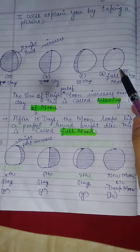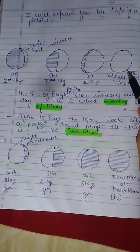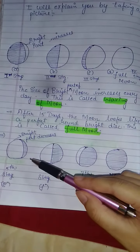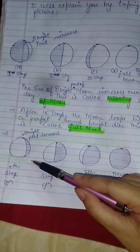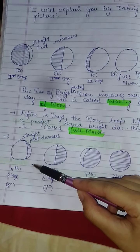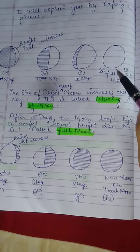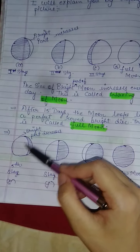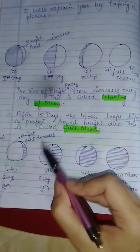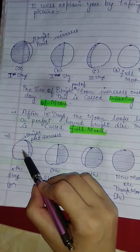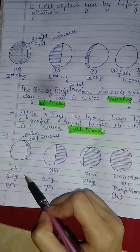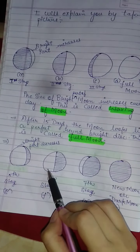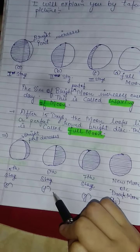After full moon day, from the 15th day onwards, the bright part starts to decrease. Black lines appear over the bright part, meaning it is reducing. In the 5th stage the bright part decreases, and in the 6th stage only half of the bright part is visible again.